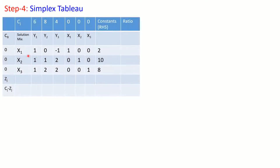The fourth step is forming the initial simplex tableau. The basic variables are listed, along with the coefficients of the objective function in the top row. The decision variables are y1, y2, y3, and x1, x2, x3 are the slack variables, with their corresponding coefficients and right-hand side values. Now we use the simplex method for maximization: first, find the Zj value by multiplying the basic variable column with the corresponding column and summing.